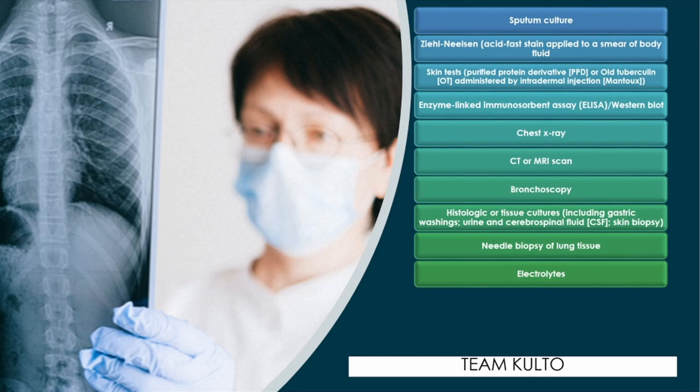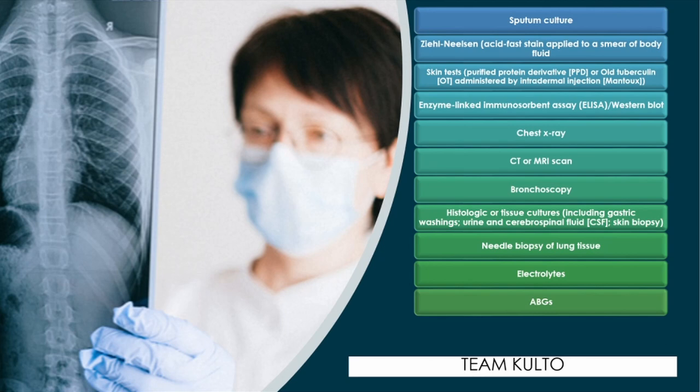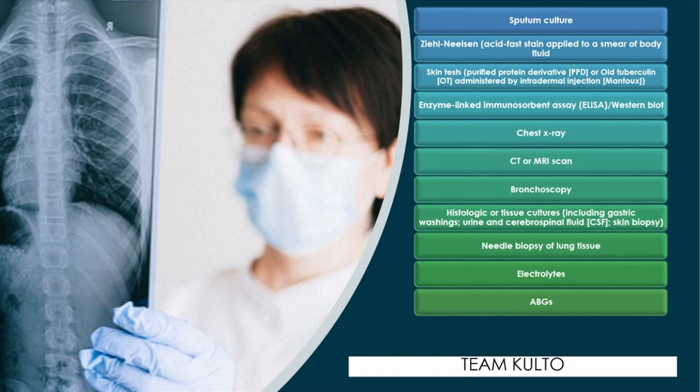Gastric washings — abnormal water retention may be found in extensive chronic pulmonary TB. ABGs may be abnormal depending on location, severity, and residual damage to the lungs. Pulmonary function studies may show decreased vital capacity, increased dead space, increased ratio of residual air to total lung capacity, and decreased oxygen saturations secondary to parenchymal infiltration or fibrosis.